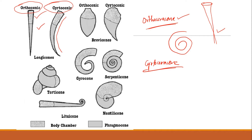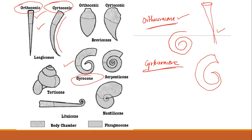The next one is your gyroceracone. In gyroceracone the shell is loosely coiled — there is coiling, but it's not tightly coiled, just loosely coiled. This is your gyrocone — there is a loose coiling, with the body chamber and then coiling near the phragmocone. So first you had a straight shell, then slightly bent, then loosely coiled.